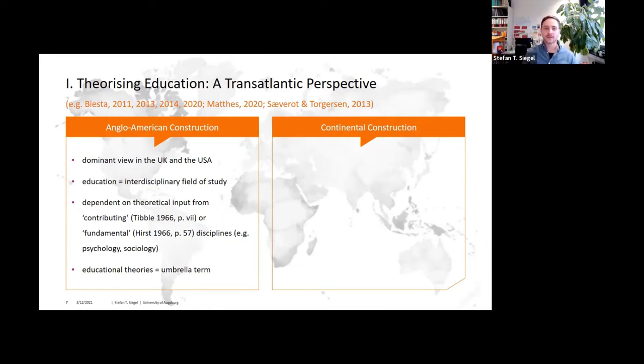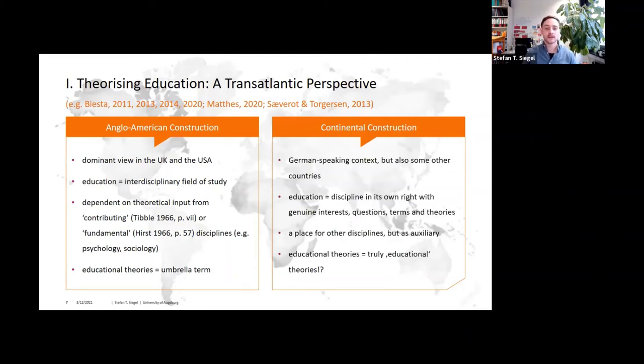Educational theories are consequently an umbrella term for theories from different disciplines that deal more or less with the phenomenon of education. One problem is here that these contributing disciplines ask, for instance, psychological or sociological questions. However, they do not ask truly educational questions in general. In some non-English speaking countries, such as Germany and Finland, the academic study of educational processes and practices is assigned to a scientific discipline in its own right: educational science, which is often synonymously referred to as pedagogic. In this continental construction, disciplines such as psychology and philosophy are conceived as adjacent disciplines. They do play an important role; however, they are separate.